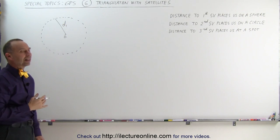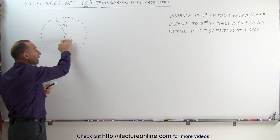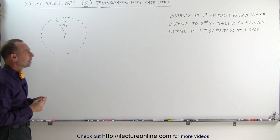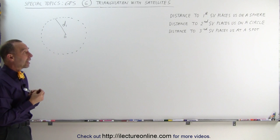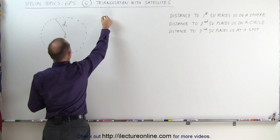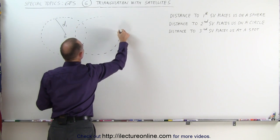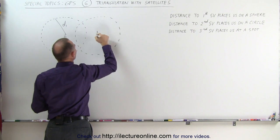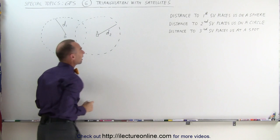Now we take a reading to the second satellite, and again this is assuming we know where the satellite is at. We know the location of the satellite and we know we're D1 away from that first satellite. We now take a reading on the second satellite, we know where the second satellite is at and we know our distance to that satellite.